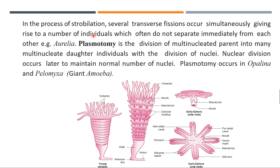In strobilation, several transverse divisions occur simultaneously in Aurelia. The cut occurs at various regions along the body, giving rise to a number of individuals. Each portion or section can develop into a separate Aurelia, surrounded by tentacles around the mouth region. They often do not separate immediately from each other — that is called strobilation.